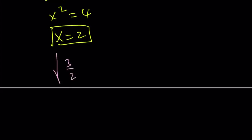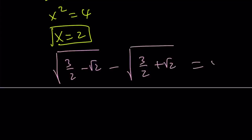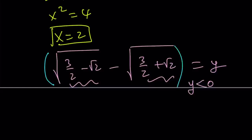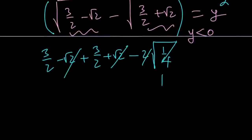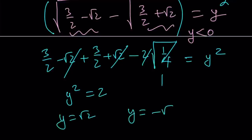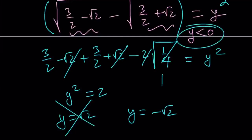This time, I write √(3/2 minus √2) minus √(3/2 plus √2) and set it equal to y. Notice that the first term is less than the second term, so y is negative — that's an important detail. Squaring both sides gives: (3/2 minus √2) plus (3/2 plus √2) minus 2·√(1/4) equals y². The √2 terms cancel again, the cross term becomes 1, and this time we get 3 minus 1, so y² equals 2. Thus y equals ±√2, but since y must be negative, we take y equals negative √2.